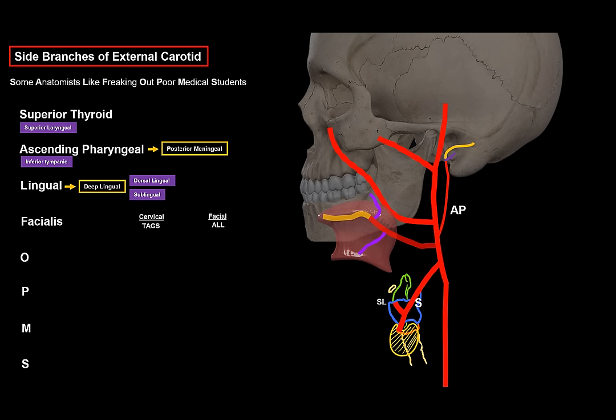For the cervical branches — TAGS: the tonsillar artery supplying the palatine tonsil; the ascending palatine artery going to the soft palate; the glandular artery for the submandibular gland; and the submental artery which also supplies the submandibular gland as well as the floor of the mouth.